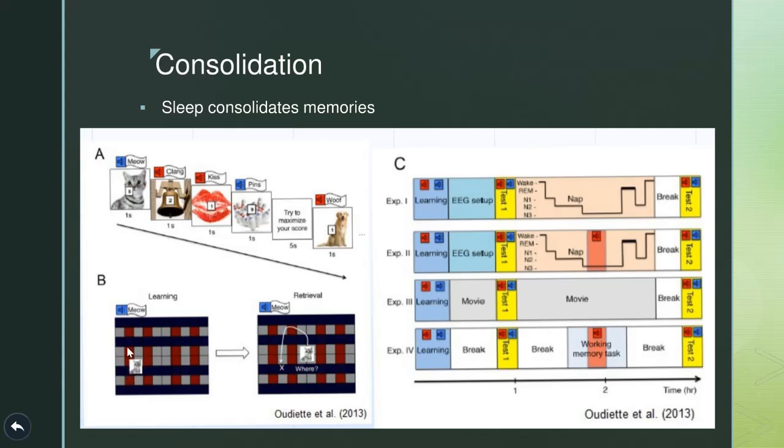Now, at the time of test, so this was the learning phase. At the time of test, they were presented with the cat, and they had to drag it to the proper place to show that they learned the location of the cat. So an association between cat or object and location in this example. So that's the learning phase and the retrieval phase. Now, what they did, which was pretty clever, is they had a couple different groups here.